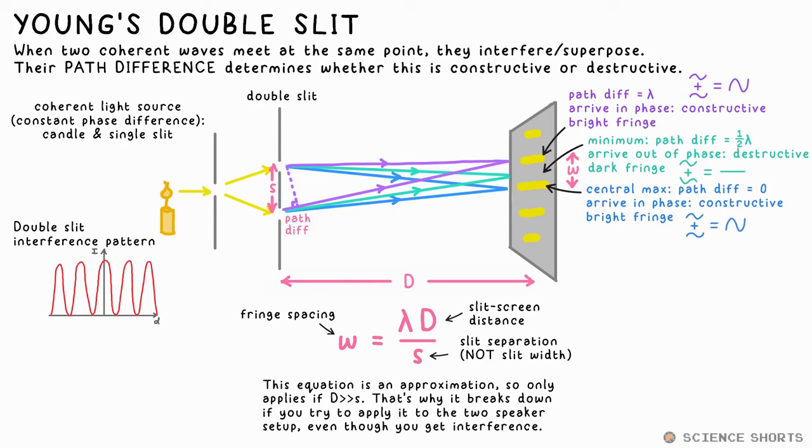But light can also diffract when you just use a single slit, as diffraction occurs at both edges of the slit. It gives this diffraction pattern instead. The two differences being that the intensity falls away quicker and the central max is double the width of the subsequent fringes.